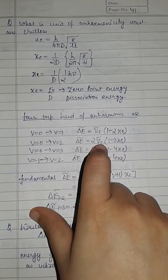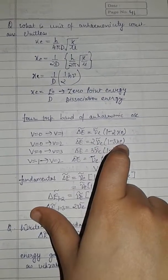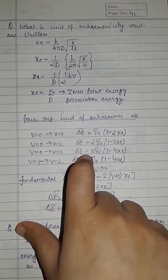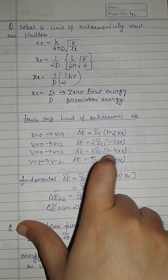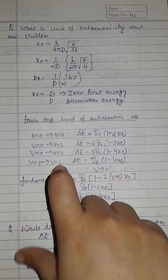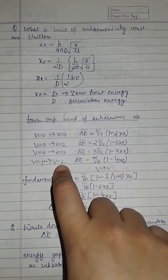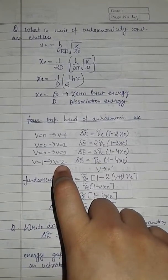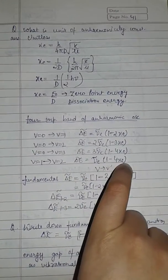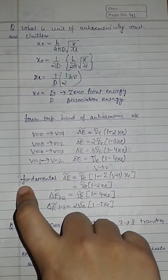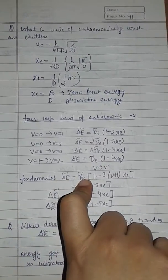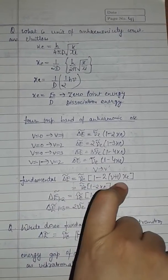energy is 2ν_e(1 minus 3X_e). For the 0 to 3 transition, energy is 3ν_e(1 minus 4X_e). For the 1 to 2 transition — the hot band — ΔE equals ν_e(1 minus 4X_e).